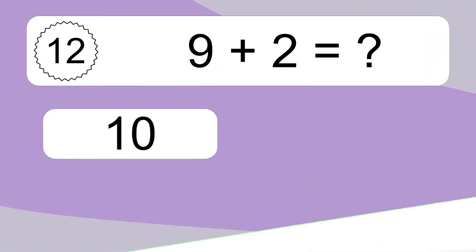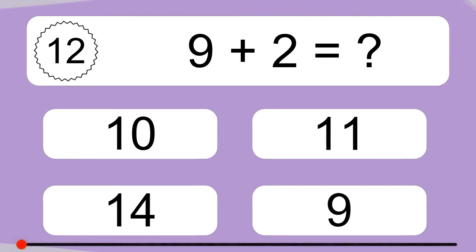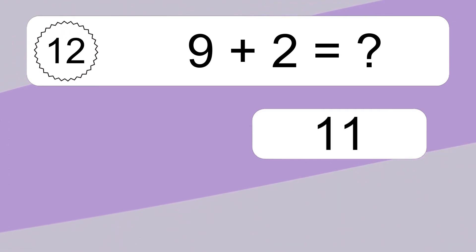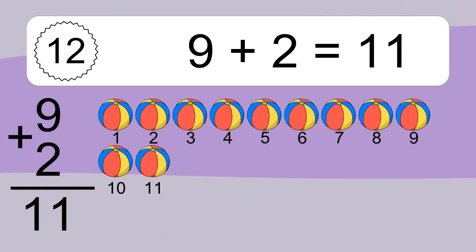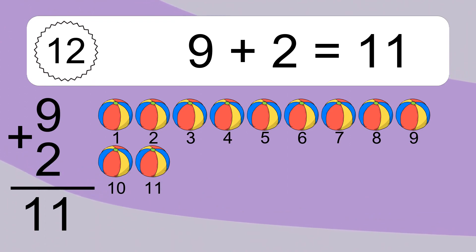9 plus 2 equals what? 9 plus 2 equals 11. Let's count it. 1, 2, 3, 4, 5, 6, 7, 8, 9, 10, 11.